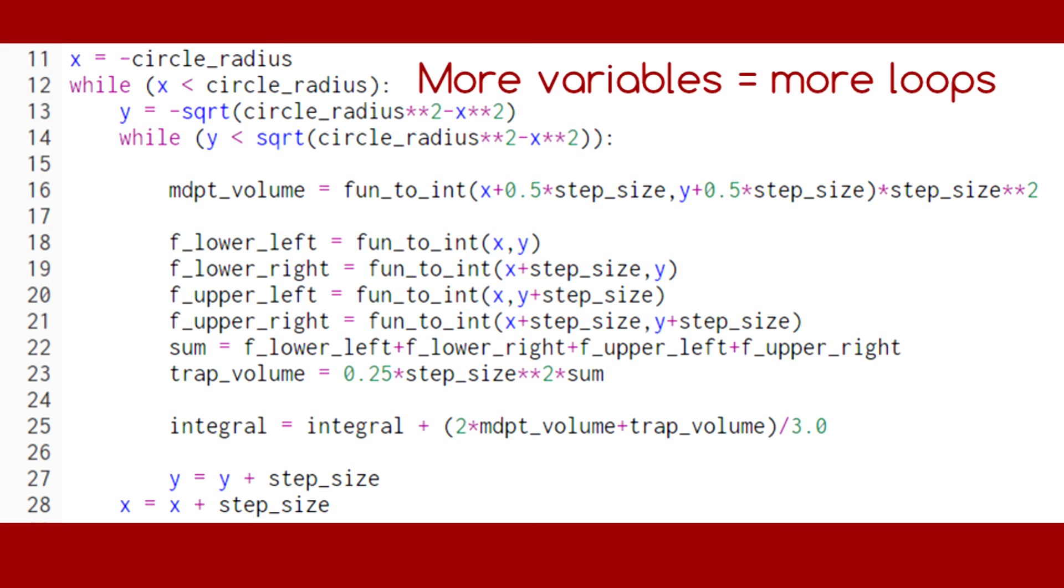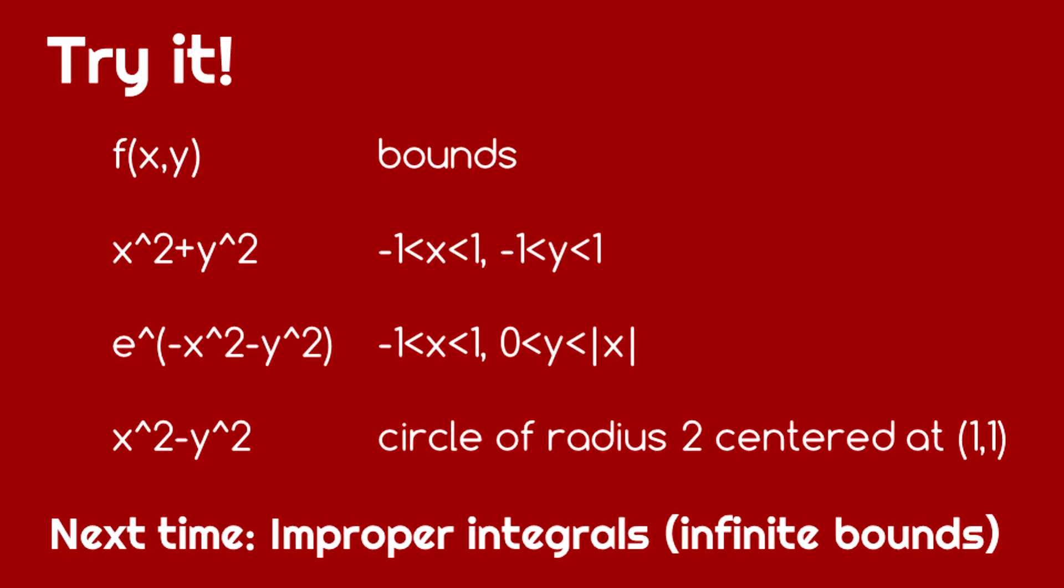Integrating over more than two independent variables just requires us to wrap additional loops. You should now be able to use the midpoint rule, the trapezoidal rule, and Simpson's rule to calculate the integral of a given function of two variables over a given two-dimensional region. Use the codes in the links in the description below to evaluate the following integrals.